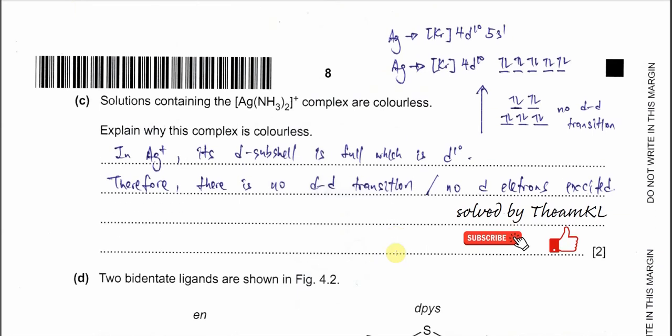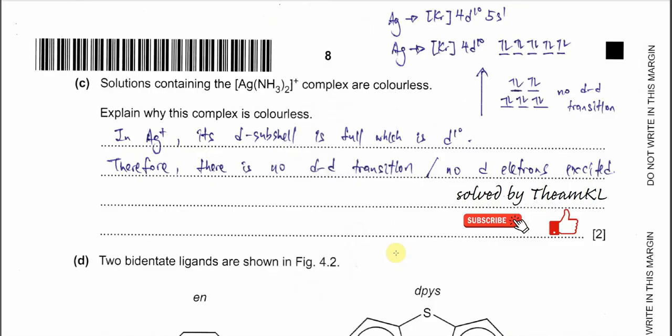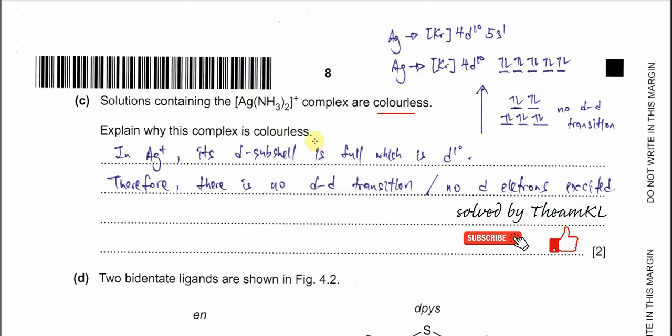Part C: Solution containing diamine silver ion is colorless. This complex ion is soluble in water and is colorless. Explain why this complex is colorless. It's quite straightforward. First, you can use the electron configuration for silver: Krypton 4d¹⁰ 5s¹. We know that silver normally forms silver positive, meaning it releases one electron from the 5s. For the silver ion, it has Krypton 4d¹⁰.